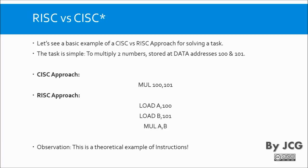On the other side, this is the RISC approach. As you can see, there are more instructions. First you access address 100 and load it into register A, then read address 101 and load it into register B. Afterwards you use a multiply instruction on A and B. CISC is called complex because one instruction can access addresses directly and perform the multiplication simultaneously.